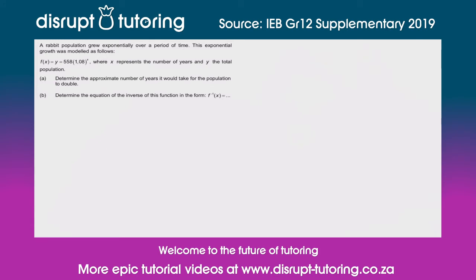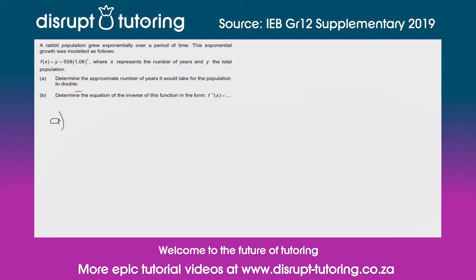So that's understanding what we're dealing with. Let's start off with question A. They've said to us: determine the approximate number of years it would take for the population to double. So we need to solve for x — the number of years.